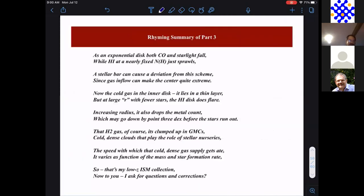As an exponential disk, both CO and starlight fall, while H1 at nearly fixed NH just sprawls. A stellar bar can cause a deviation from this scheme, since gas inflow can make the center quite extreme.